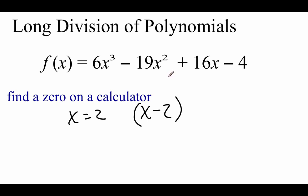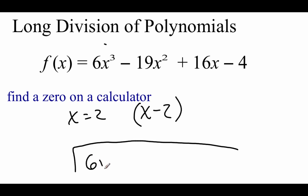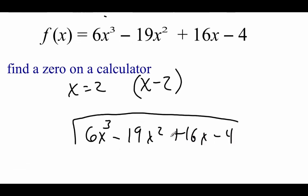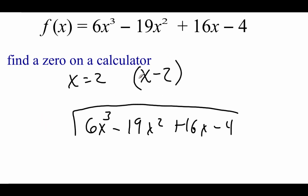Remember, factoring is just like division, so that's where this whole long division thing comes into play. We're going to do our division to factor out this polynomial. We're going to set it up exactly like long division from third or fourth grade. We put our division symbol, take this big long polynomial underneath — 6x cubed minus 19x squared plus 16x minus 4 — and outside of our division symbol we put the thing we're factoring out: x minus 2.